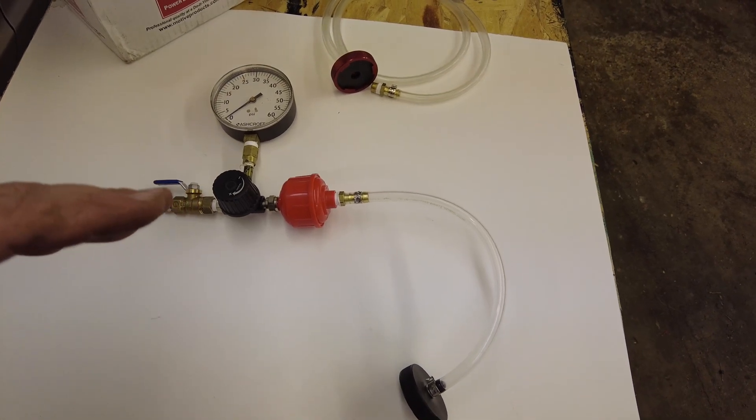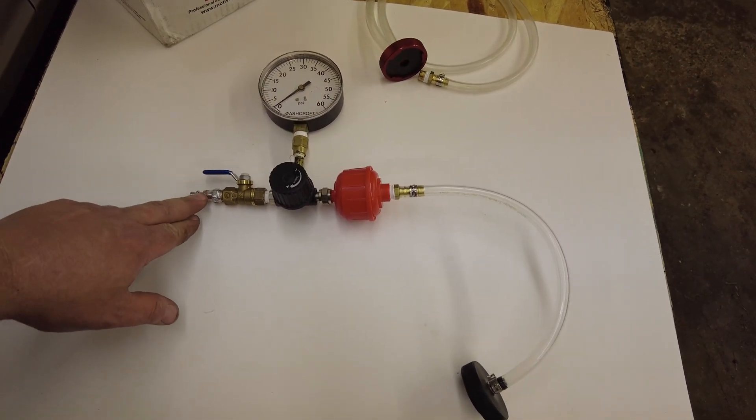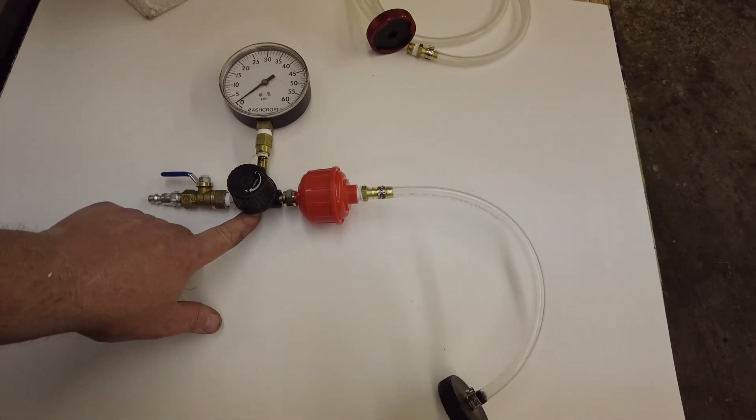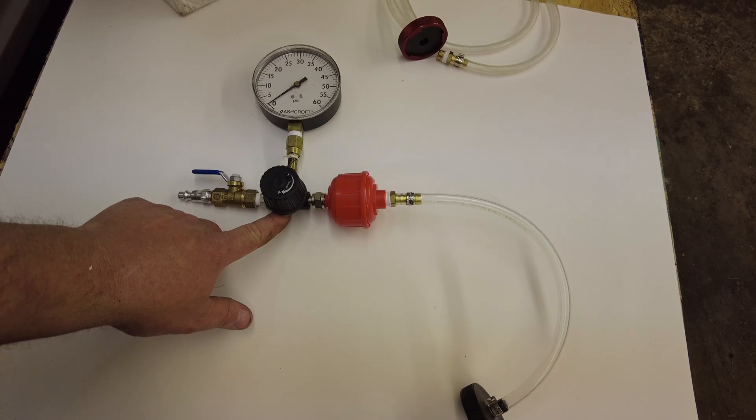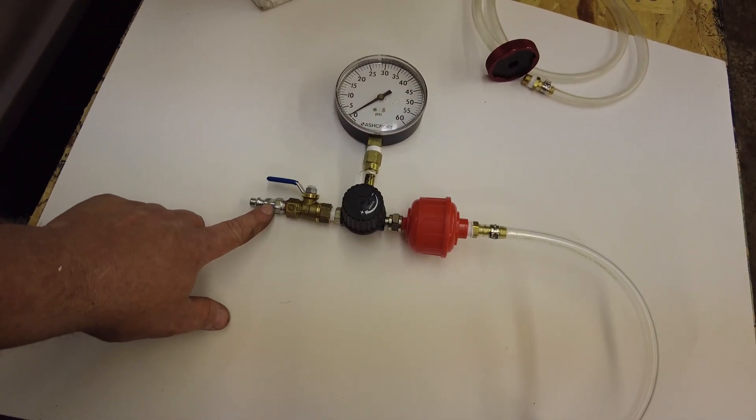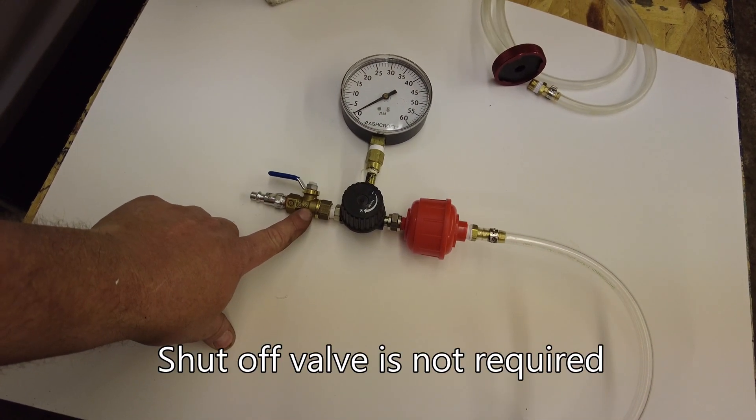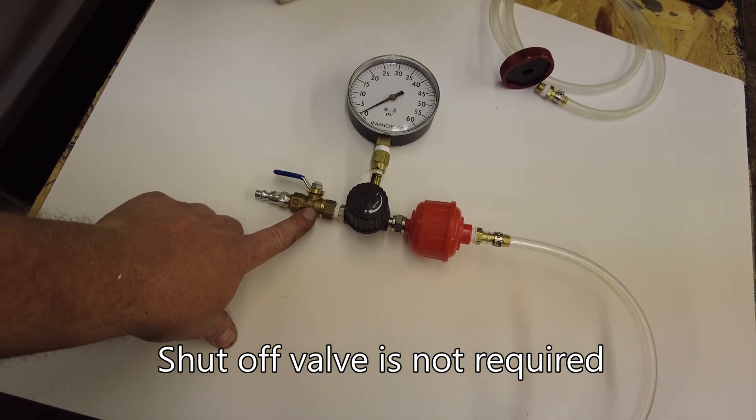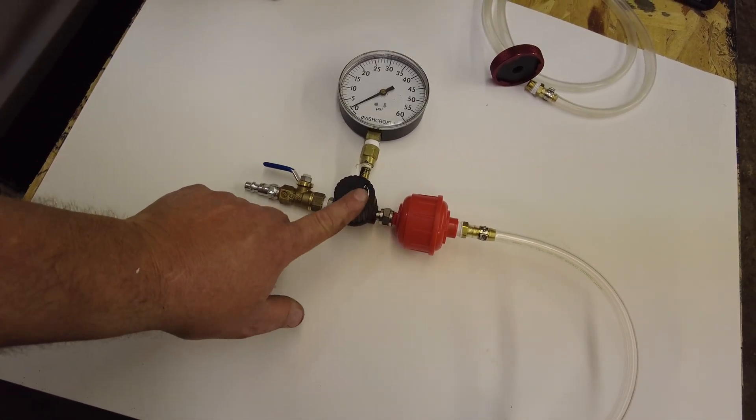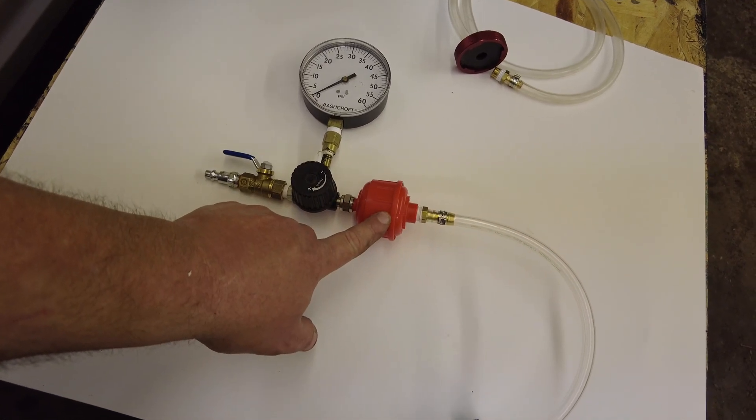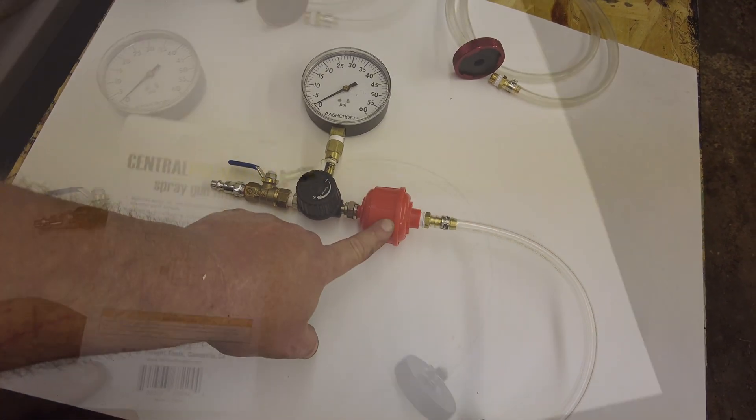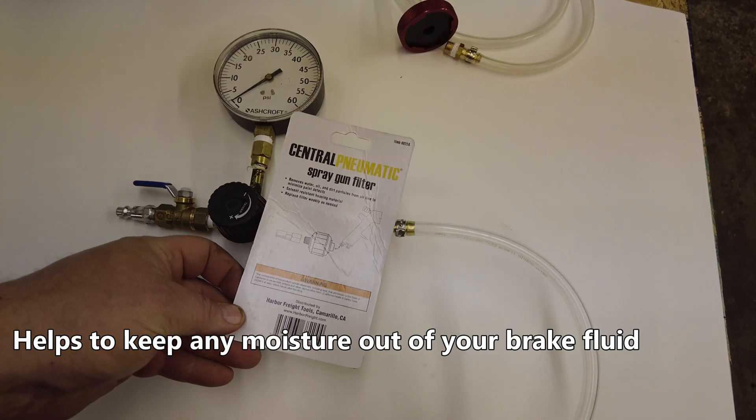Go to Harbor Freight, get yourself a pressure regulator like you would buy for one of their paint guns. You get an air nipple, I had a shutoff valve in my plumbing kit so I just put a valve there, put the regulator on.